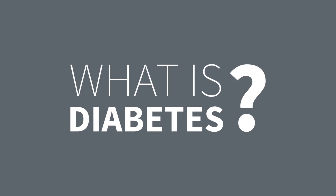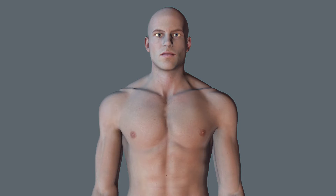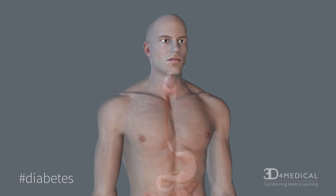What is diabetes? Diabetes occurs when the body does not respond properly to high sugar levels in the blood.